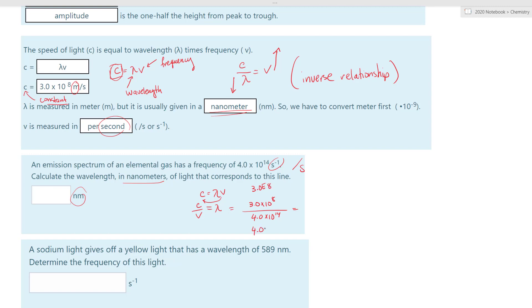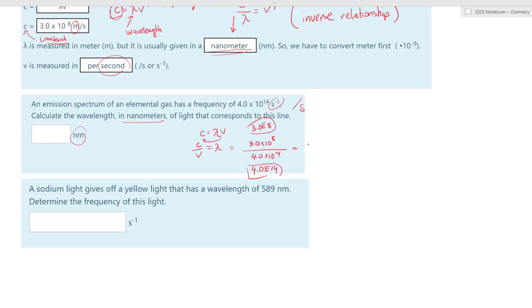So that way, we don't make a lot of mistakes. Use the E button right there. And that turned out to be what? So once we plug into our calculator, we have 7.50 times 10 to the negative 7. Now this is in meters, but we want it in nanometers, so we have to convert that. So again, we have one meter equal to what? 10 to the 9th nanometers. And that's all we have to do.